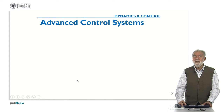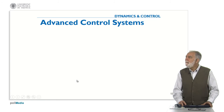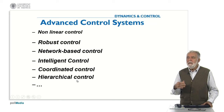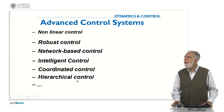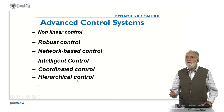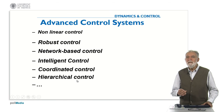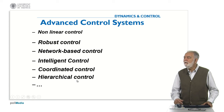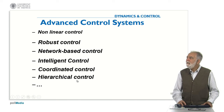There are many other advanced control systems we will not cover in detail: non-linear control for plants that are not well described by a linear model; robust control, where the controller works well for different plant models; network-based control, where the controller connects to the plant through the internet or a network; intelligent control using artificial intelligence tools; coordinated control; and hierarchical control. These are all areas worth exploring in the future.